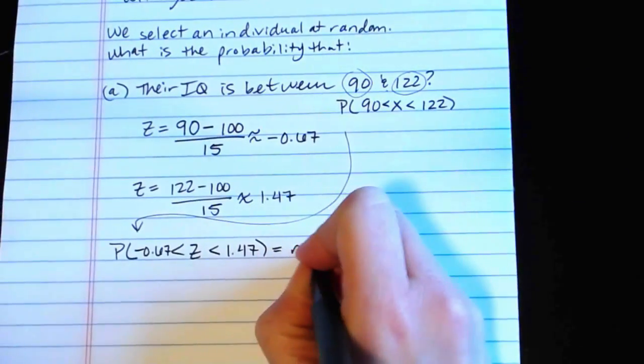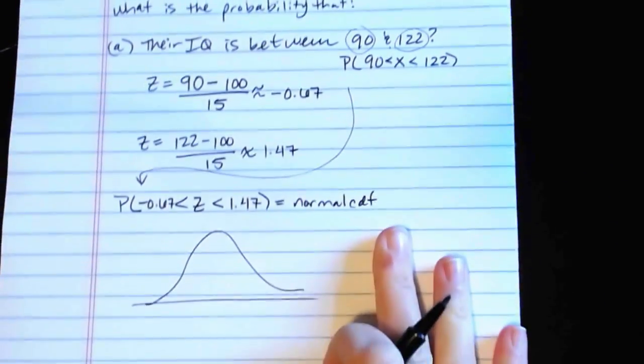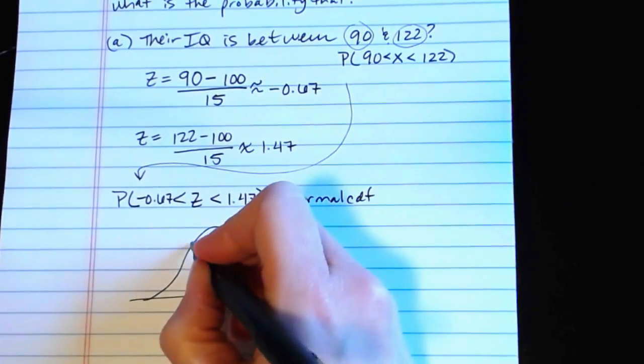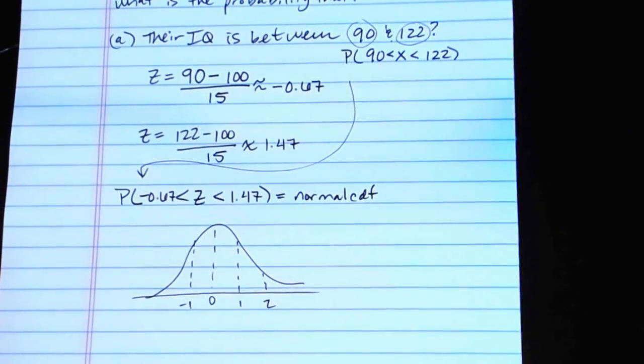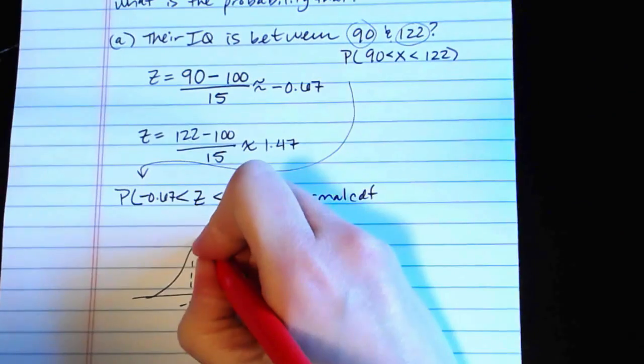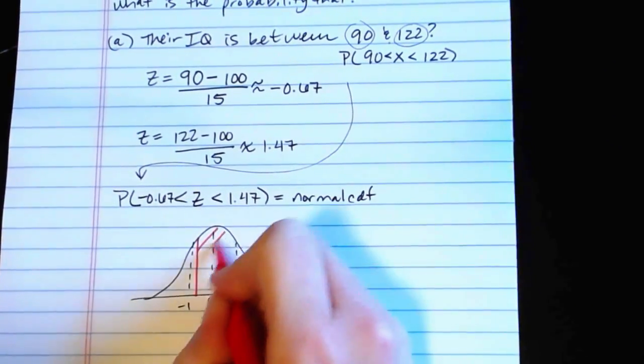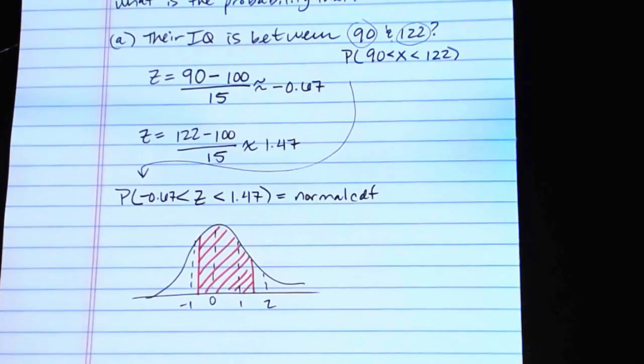We'll put these values into normal CDF, which again, you can make a sketch here if you want to, just so you can compare. So if I want to shade in the area of interest, negative 0.67 is going to be about here, 1.47 is going to be about here, and this is the area that I'm looking at.